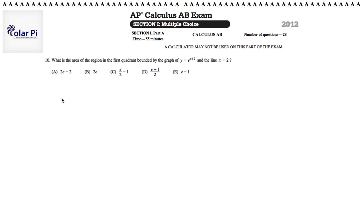Hi, welcome. In this video, I'm going to go through problem 10. In problem 10, it says what is the area of the region in the first quadrant bounded by the graph of y equals e to the x over 2 and the line x equals 2.